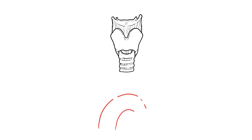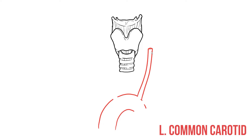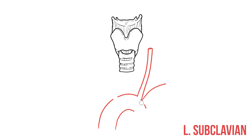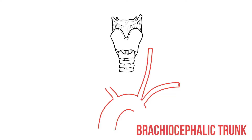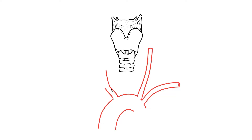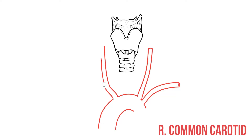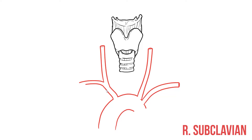Coming off the arch are the arteries that supply the head and upper limb. On the left there are a common carotid to the head and a subclavian artery to the upper limb. We'll find both of these vessels on the right too, but instead of leaving the arch directly, they first form a common vessel known as the brachiocephalic trunk, which then splits into right common carotid and subclavian branches.